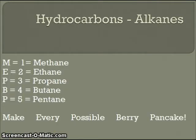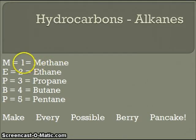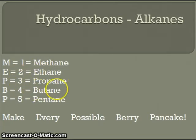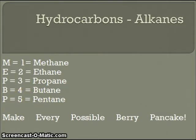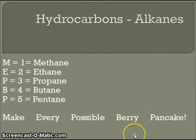Let's take a look at the first five alkanes. The first one is methane, which has only one carbon atom. Ethane has 2 carbon atoms. Propane has 3. Butane has 4. And pentane has 5 carbon atoms. The mnemonic device to help remember this is: make every possible berry pancake — I'm kind of partial to blueberry myself.